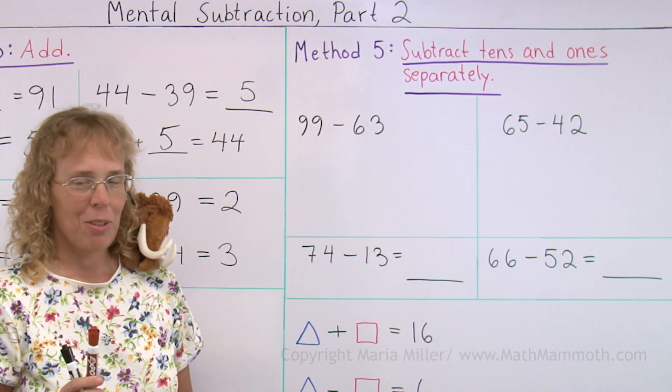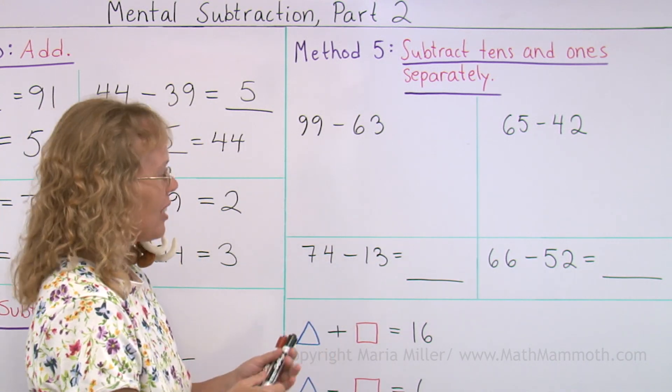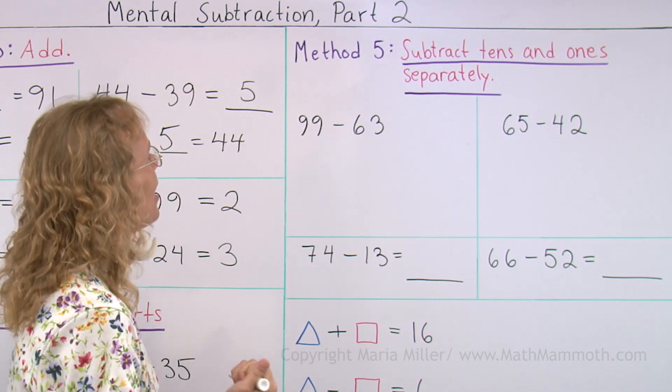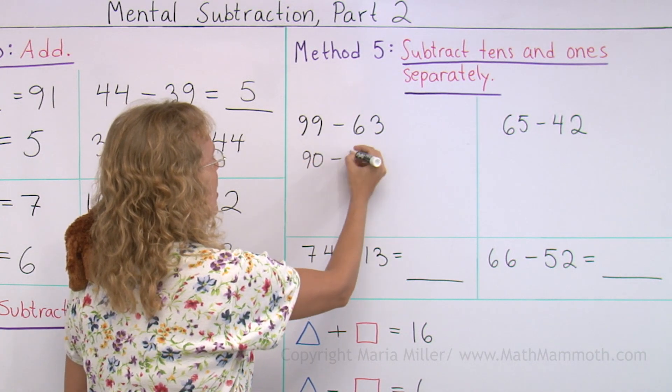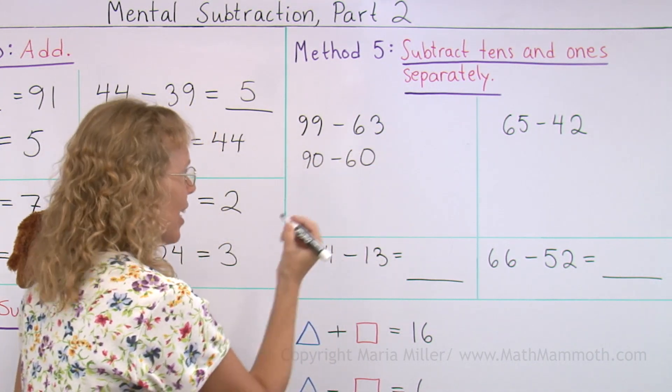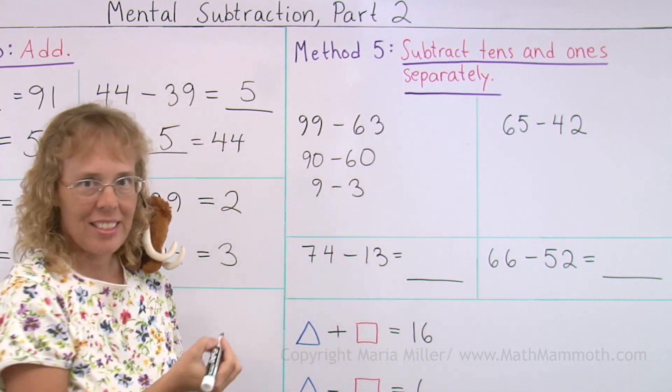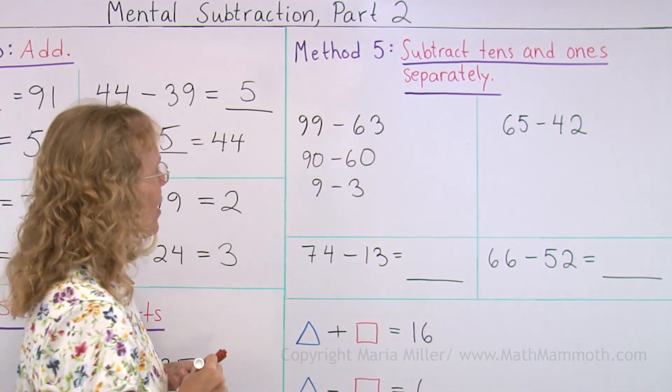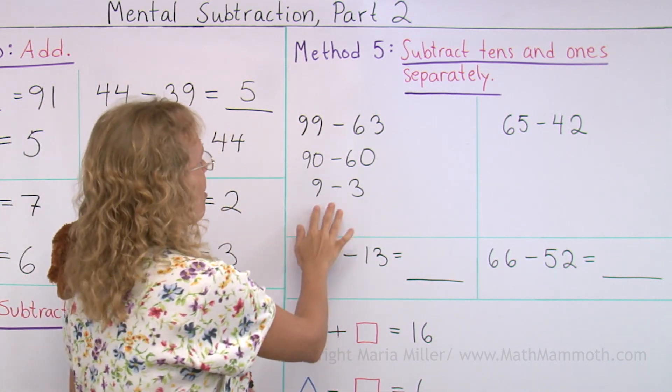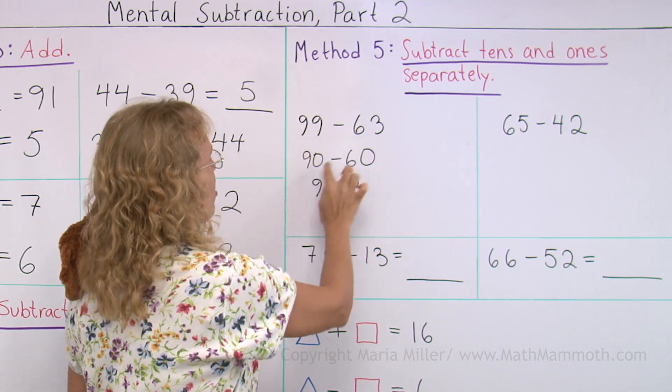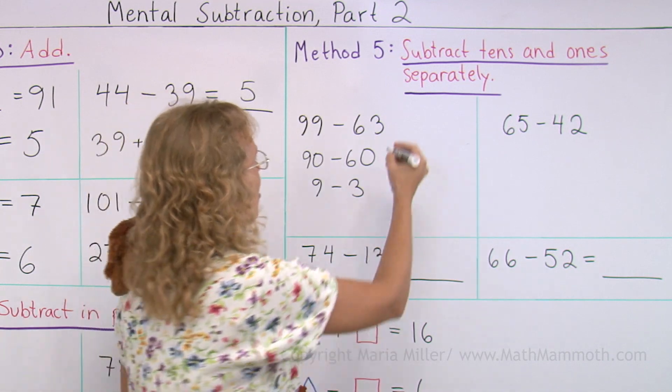Here we do almost the same. We again subtract in parts. But we are going to subtract 10s and 1s separately. Let me show you. 99 minus 63. I basically think of 90 minus 60, and I think of 9 minus 3. The 10s and 1s separately. And this works sometimes. It doesn't always work for all numbers, for all subtractions, but it works this time. 90 minus 60. This here is 30. And this here is 6. So the answer is 36.